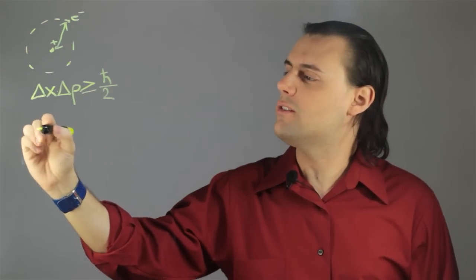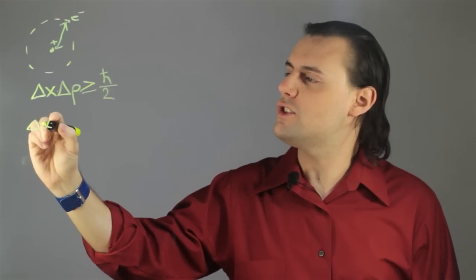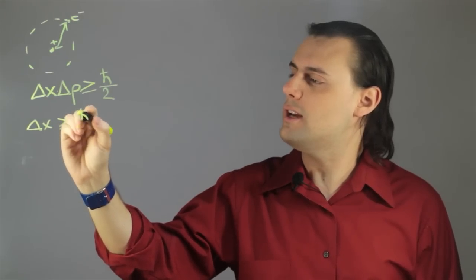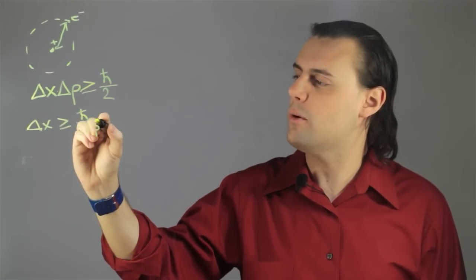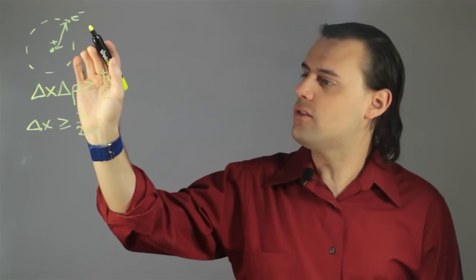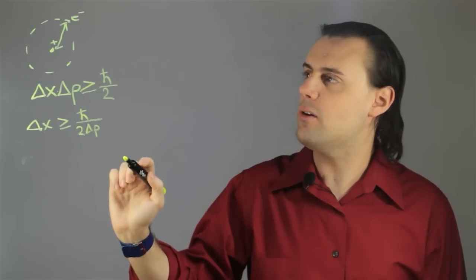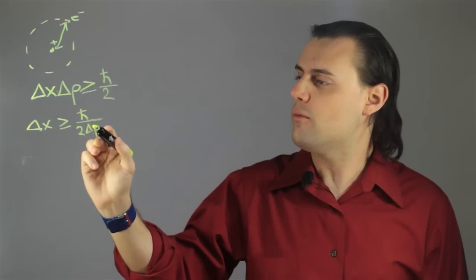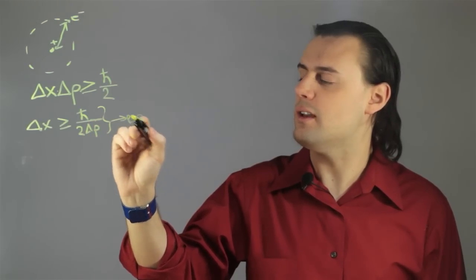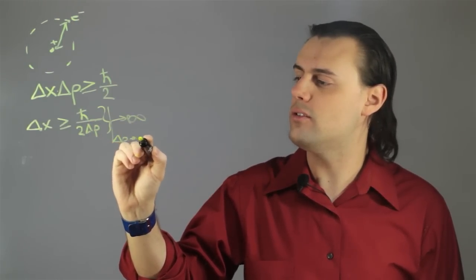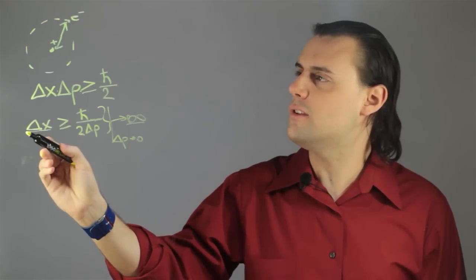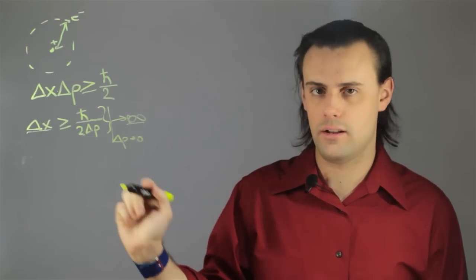If we examine the uncertainty in the position, it has to be greater than or equal to h-bar over 2 times the uncertainty in the momentum. So, if the uncertainty in the momentum goes to zero, if the electron goes to rest, then we see that this goes to infinity as delta p goes to zero. Which means we don't know anything about the position of the electron, and neither does the universe.